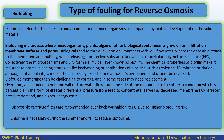Over time, a biofouled membrane will restrict water flow from one side of the membrane to the other, a condition perceptible in the form of greater differential pressure from feed to concentrate, as well as decreased membrane flux, greater pressure demand, and higher energy costs. Disposable cartridge filters are recommended over backwashable filters. Due to higher biofouling risk, chlorine is necessary during the summer and fall to reduce biofouling.